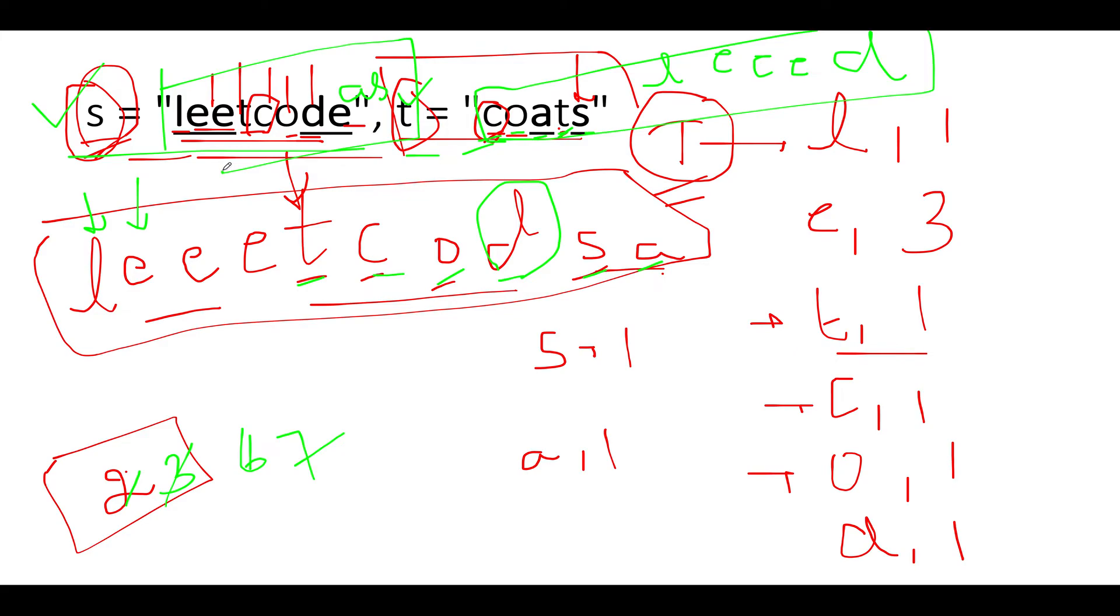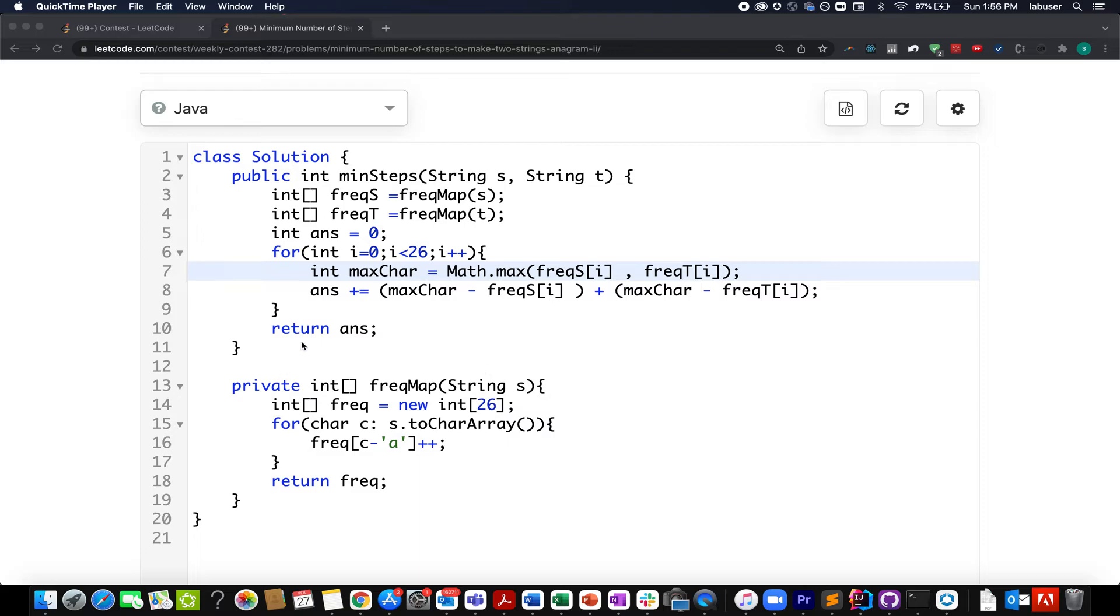Here I have created a helper method which actually calculates the frequency map corresponding to string s, and again I pass in to create the frequency map corresponding to string t. This you are already aware of, we have solved it plenty of times in the past. I have created the answer variable initialized to zero.